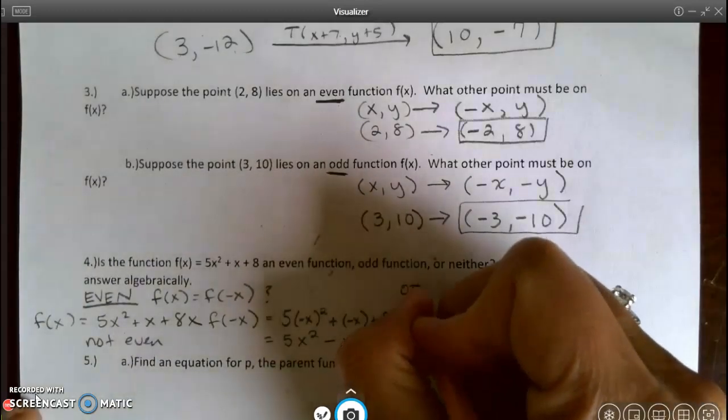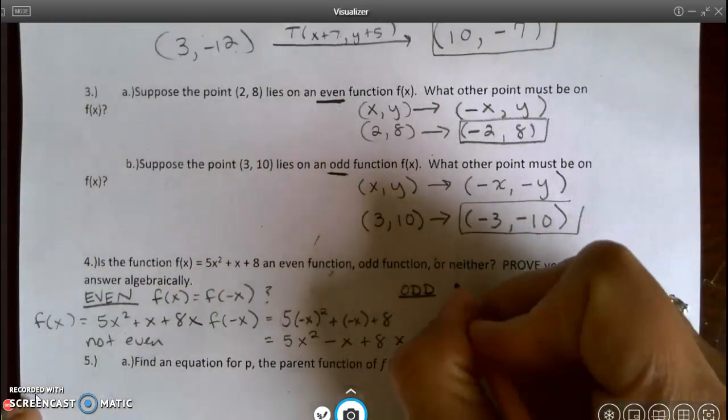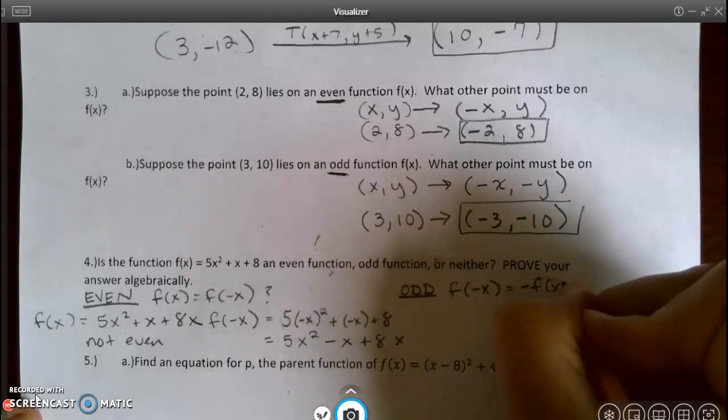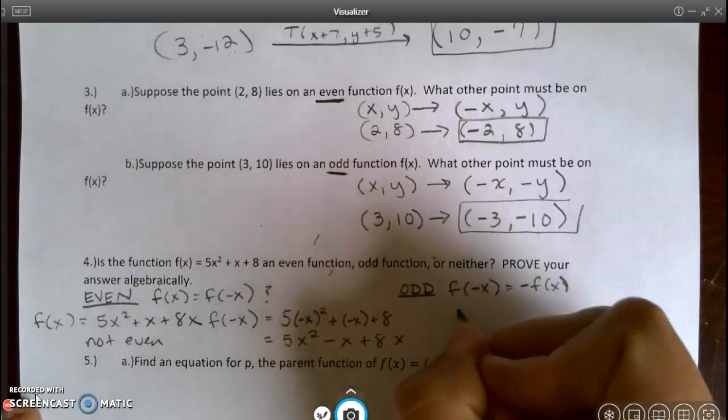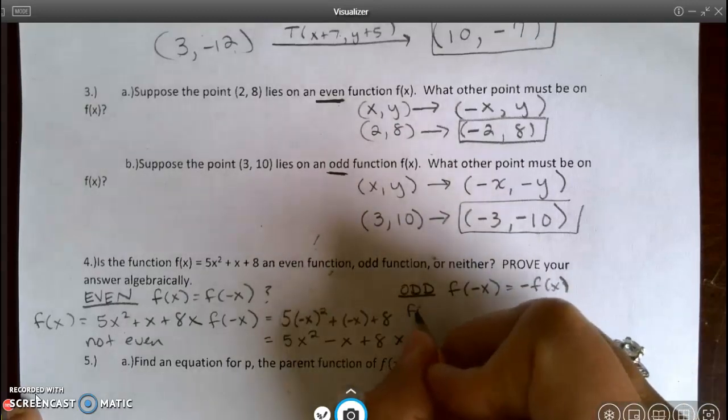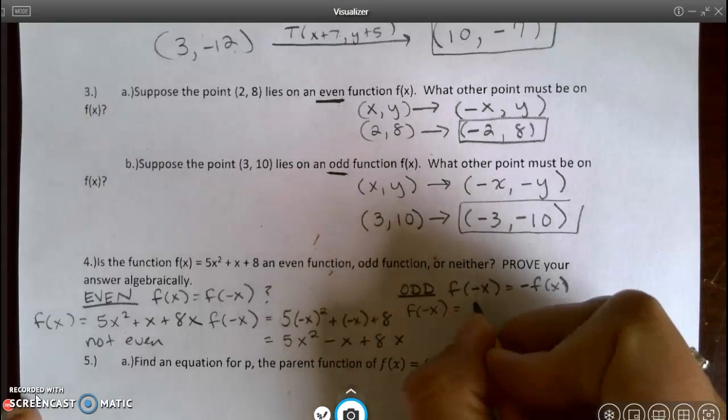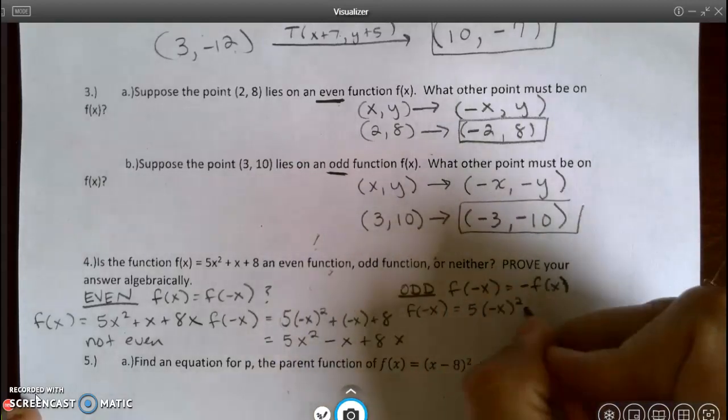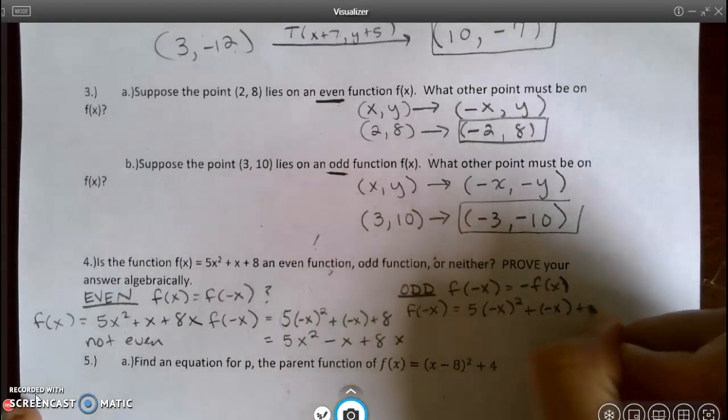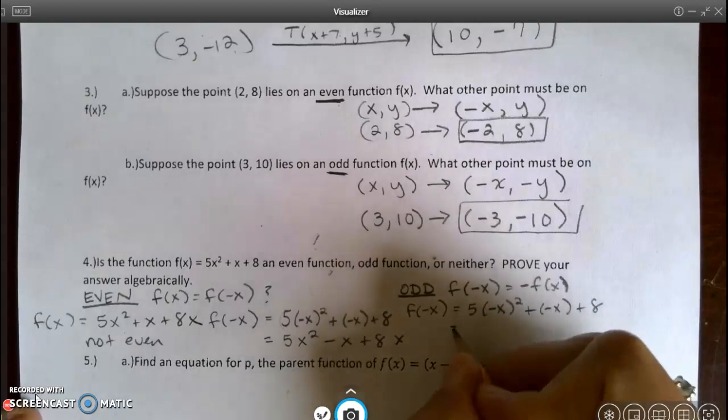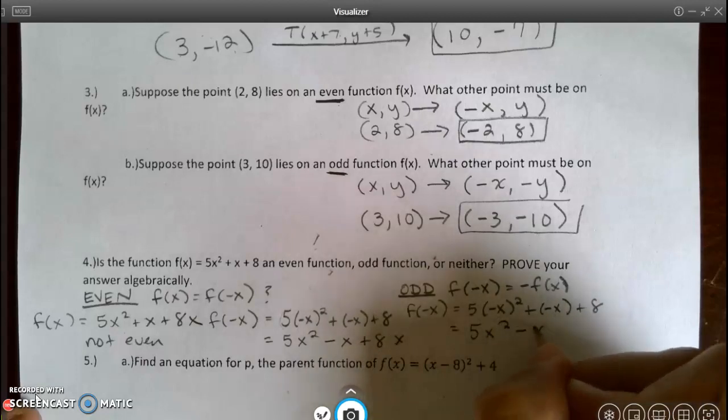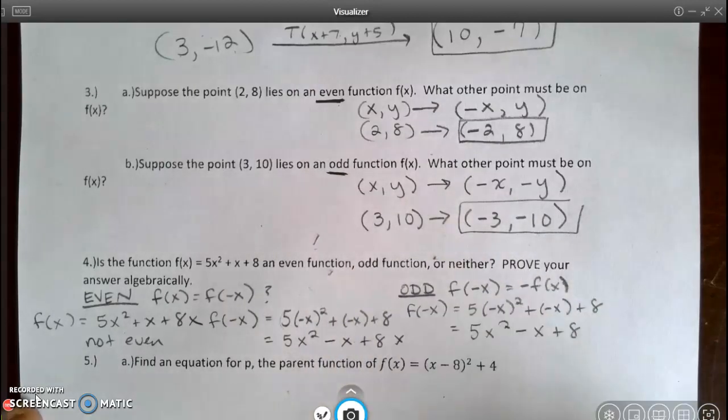Let's see if it's odd. f at negative x equals negative f of x. Let's start with the f at negative x. That's where I'm going to put that negative x. This is what I just did in the even test, but I need to show it again. And when I square a negative, it becomes positive. Plus a negative becomes minus.